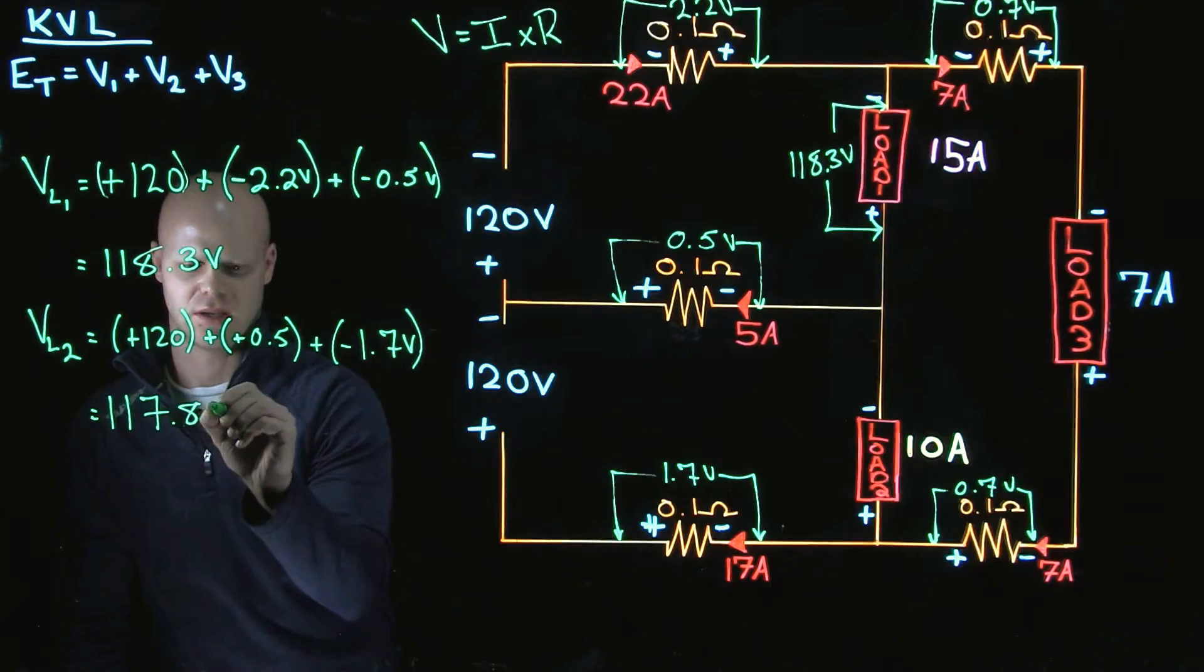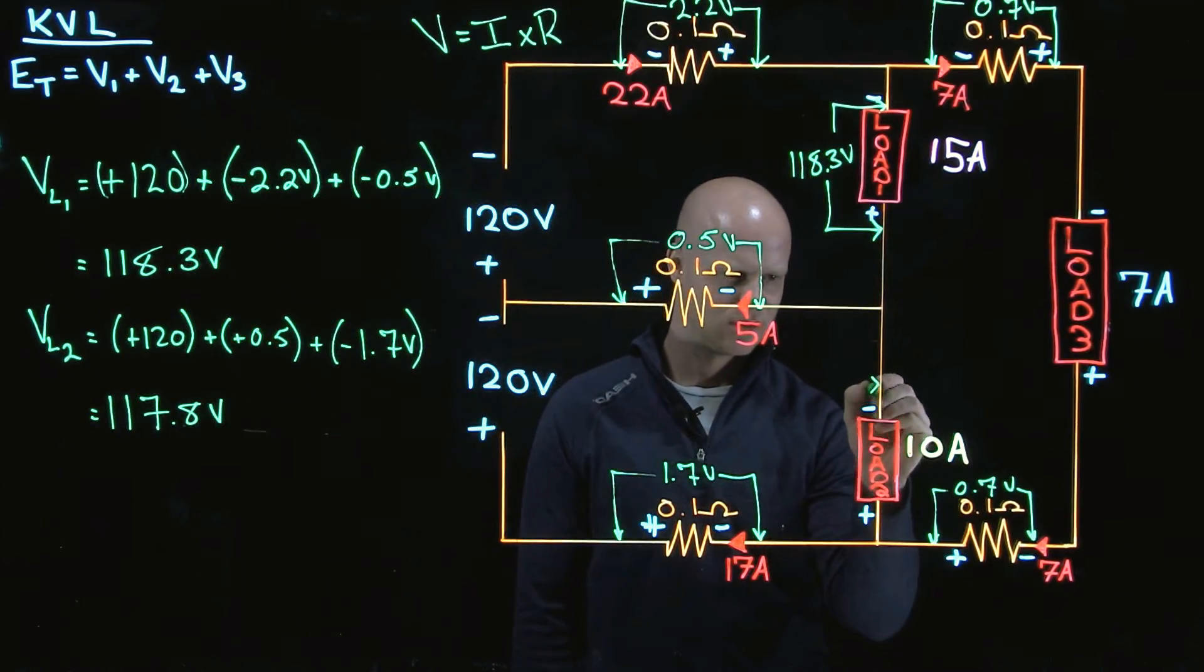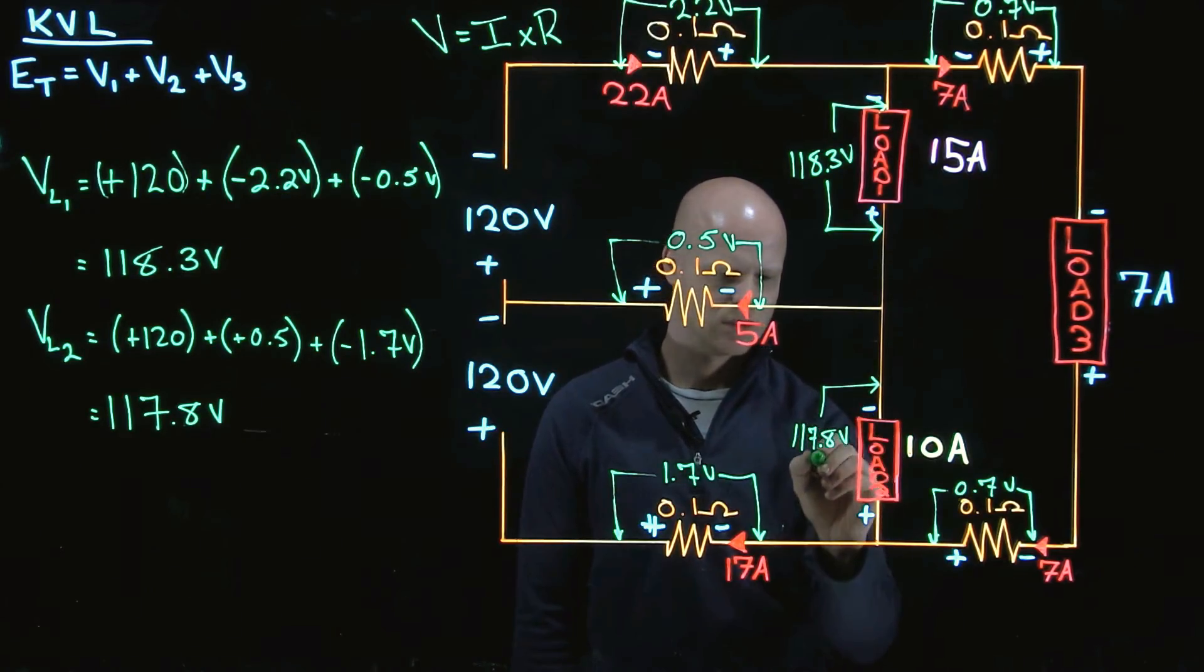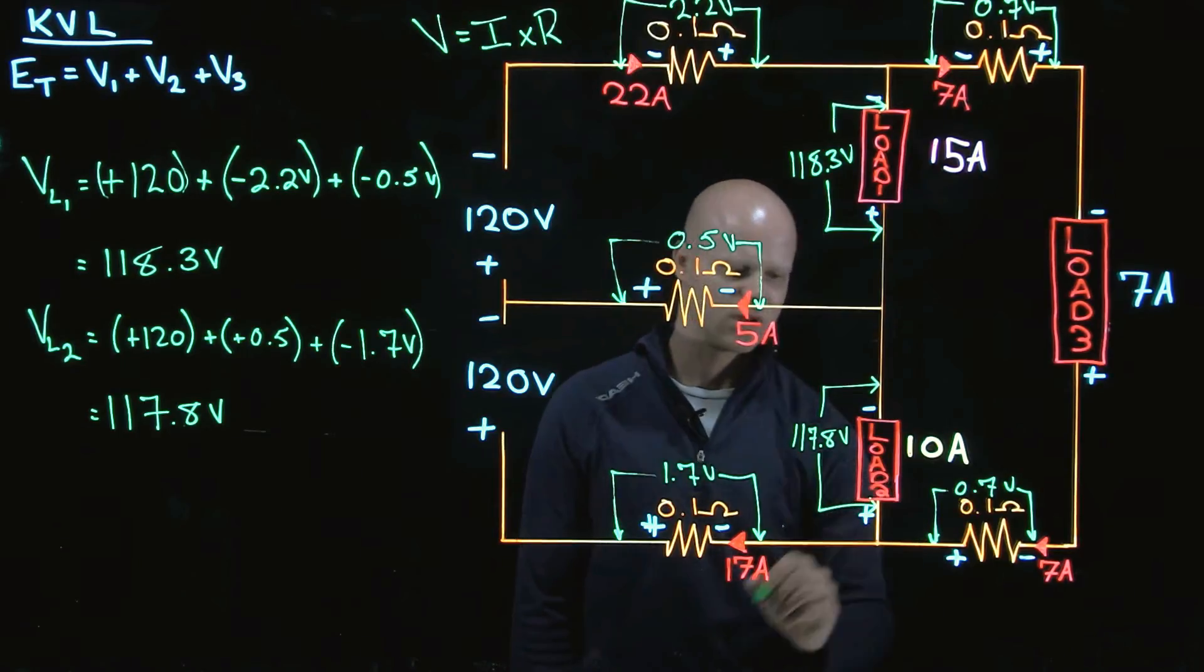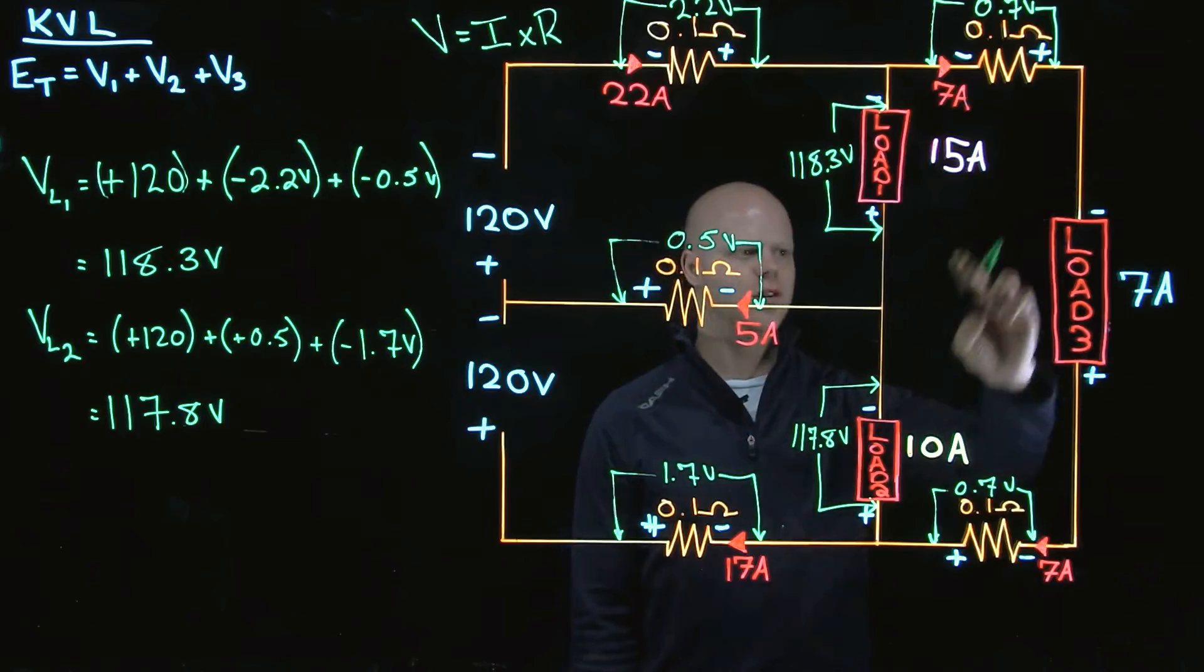I'm going to end up with 117.8 volts is the voltage across this load. 117.8 volts is what I would measure across that load. Now the last thing I have to do is the voltage of load three.